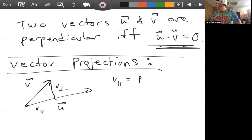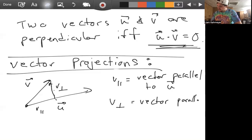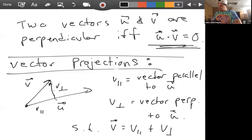V parallel here, this is a vector parallel to U. And V perp, or perpendicular, this is a vector perpendicular to U, such that V equals V parallel plus V perpendicular. And so what we're looking at right now is this V parallel, we're looking at what are the components of V in the direction of U.